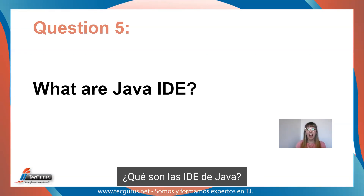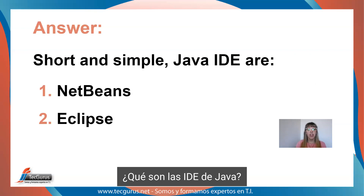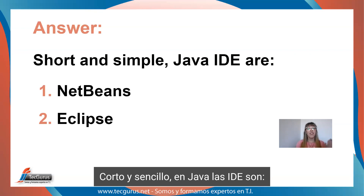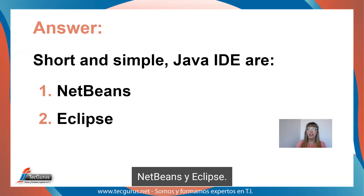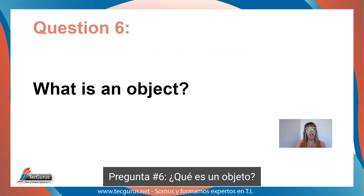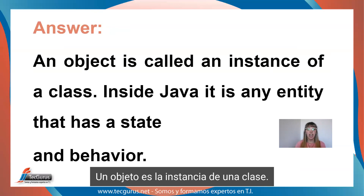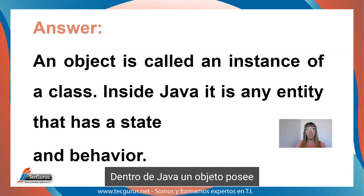Let's continue with question five. What are Java IDEs? Short and simple, Java IDEs are NetBeans and Eclipse. Question six. What is an object? An object is called an instance of a class. Inside Java, it is any entity that has a state and behavior.